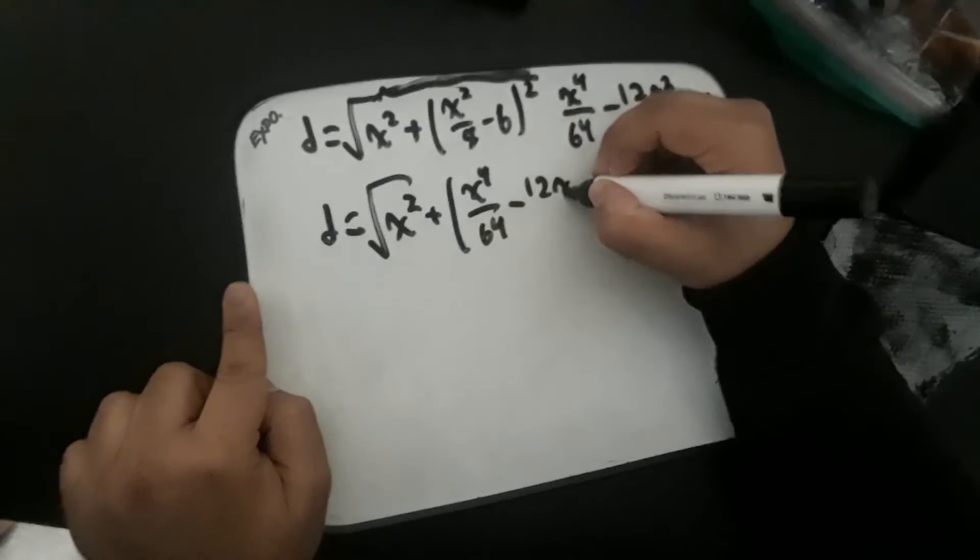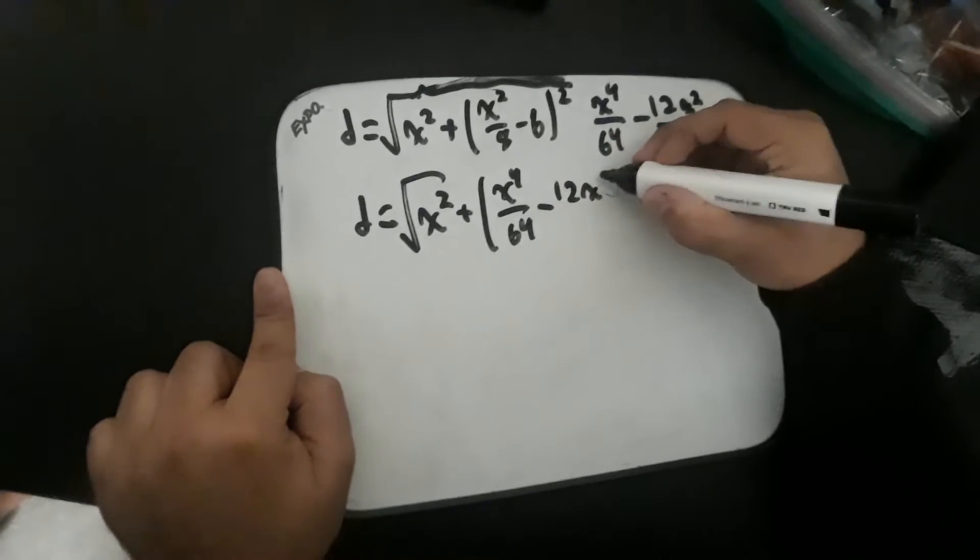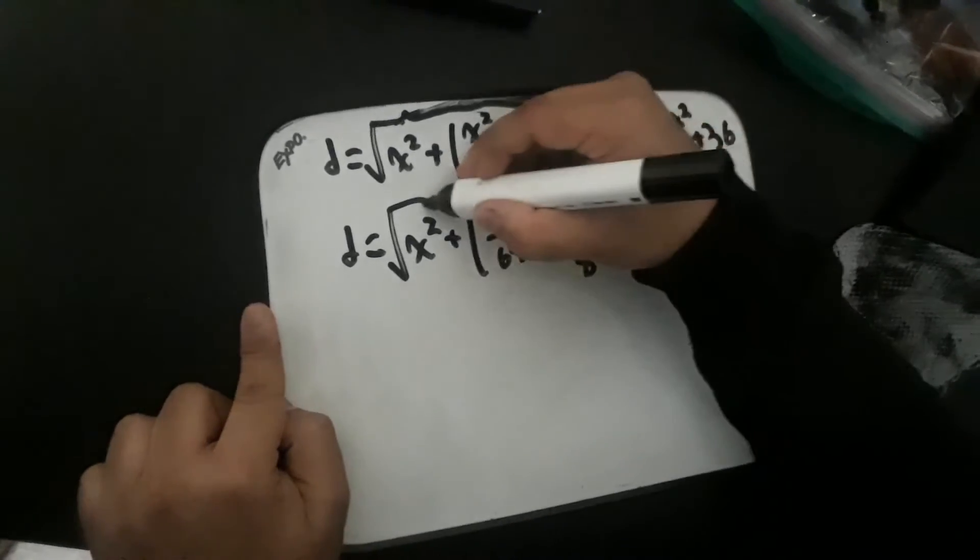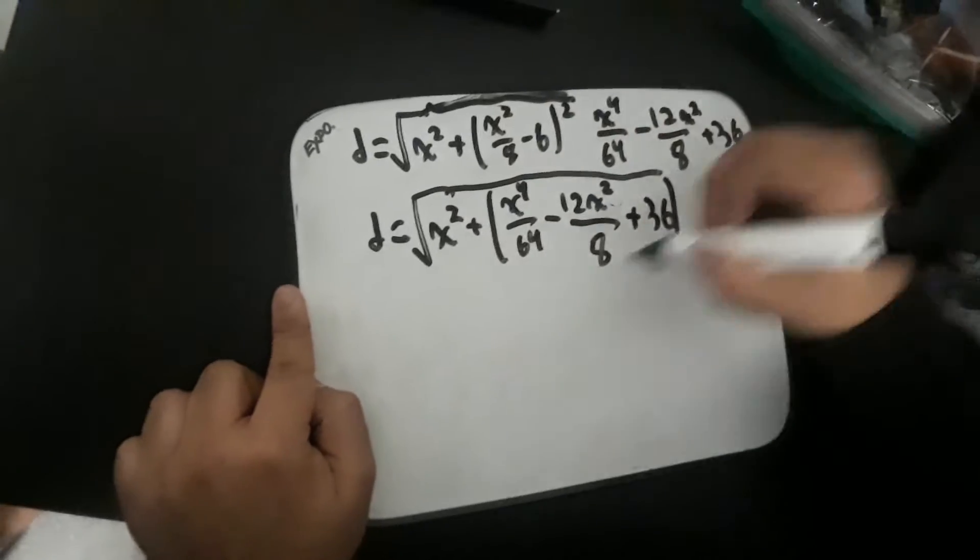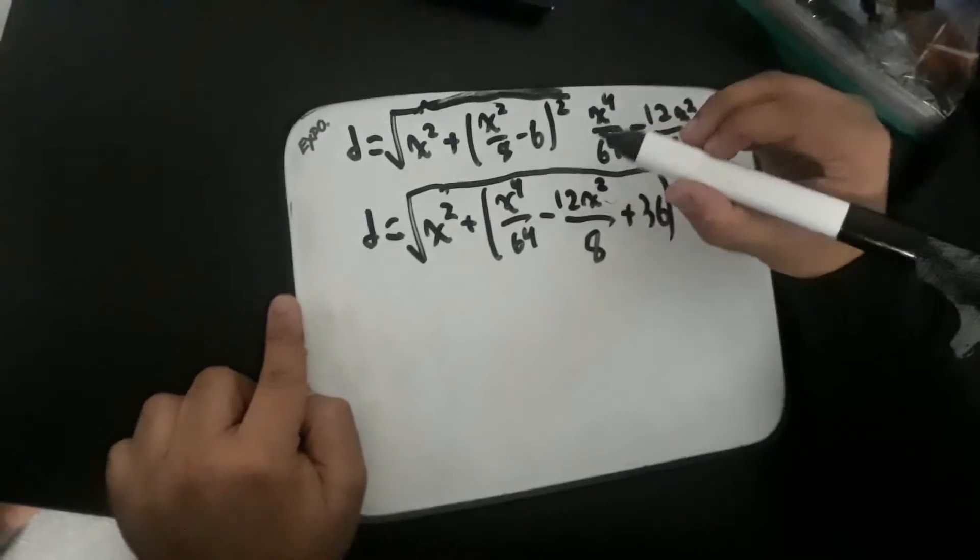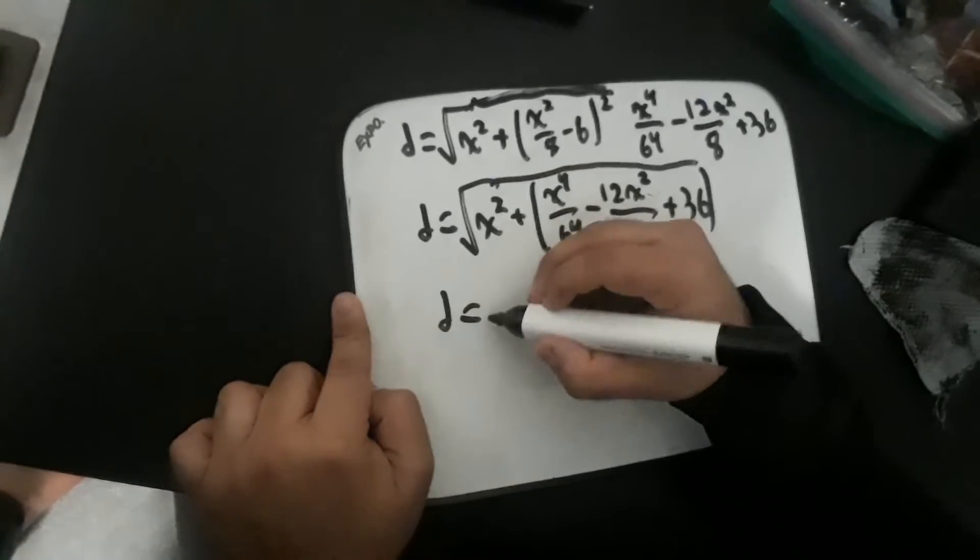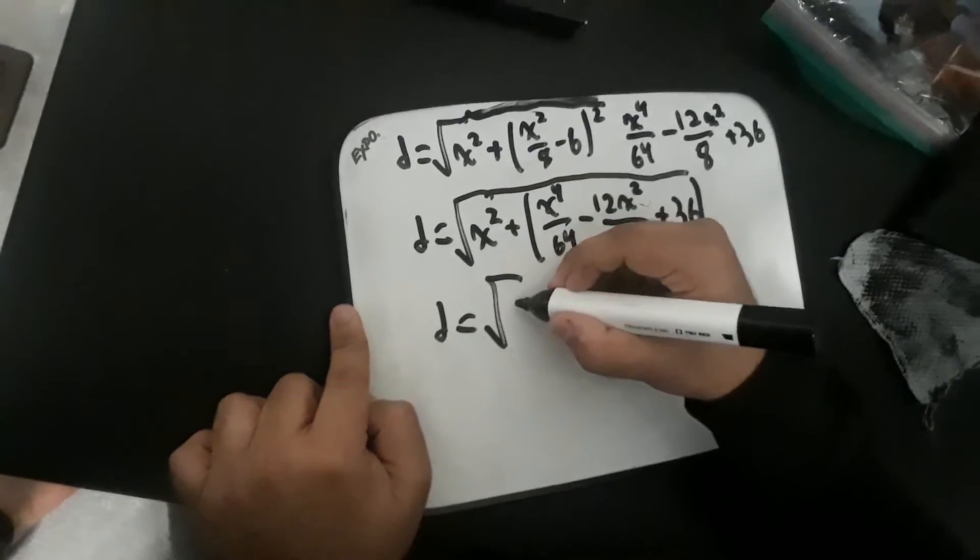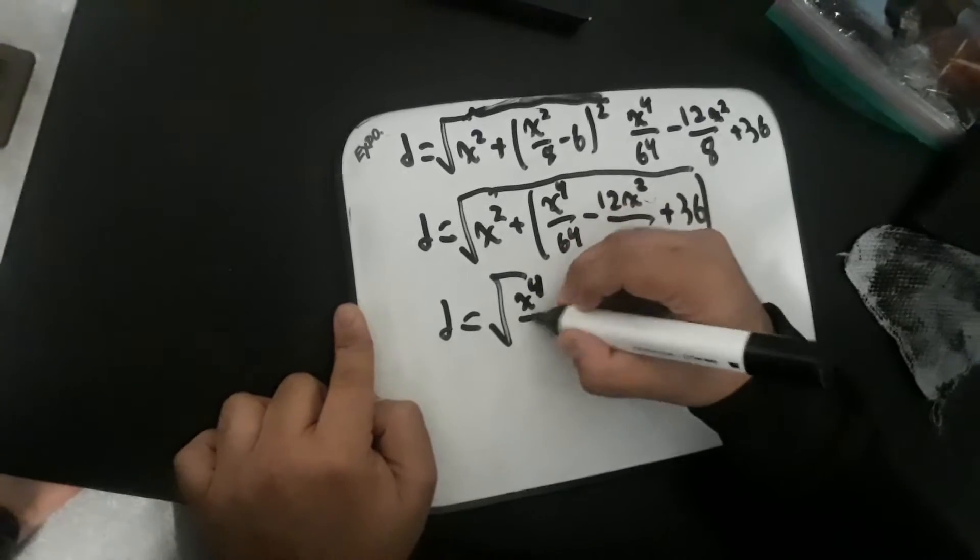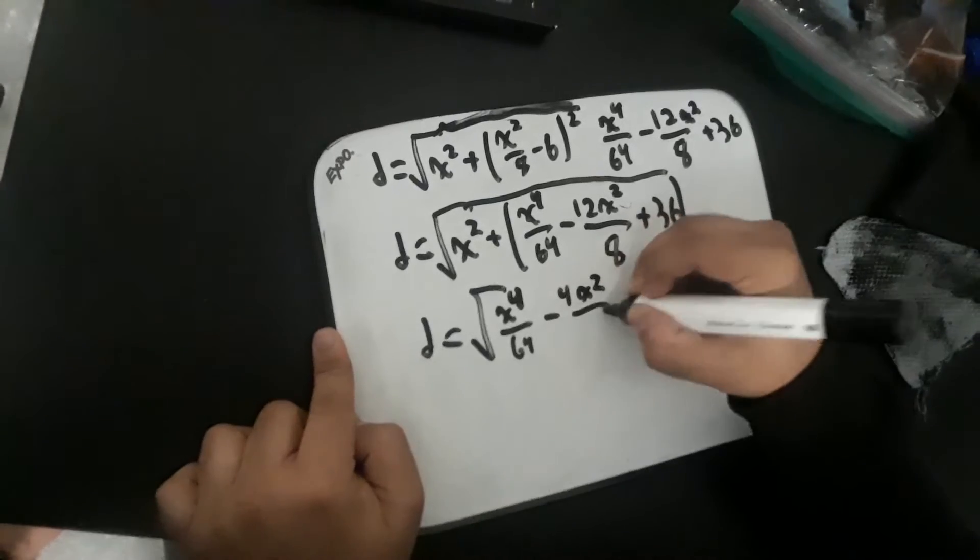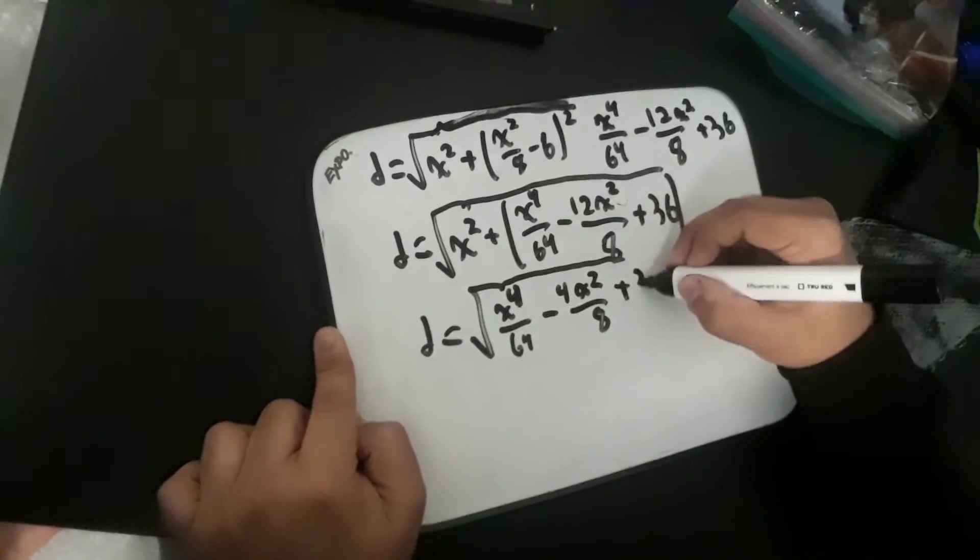These two x squared terms cancel, or simplify together to make negative 4 over 8 x squared. So we can write this as x to the 4 over 64 minus 4x squared over 8 plus 36.